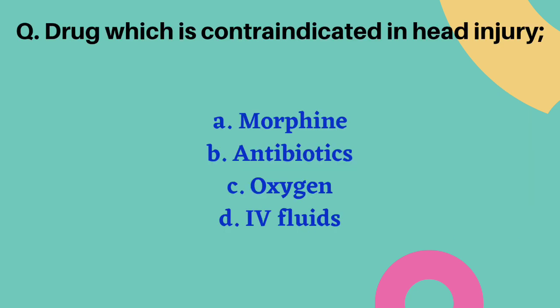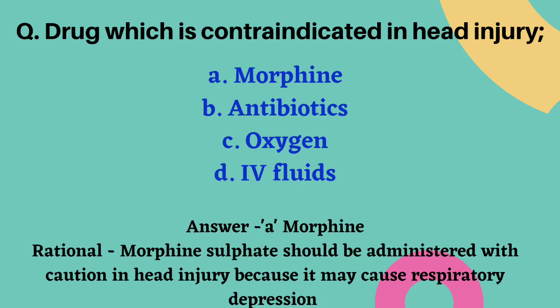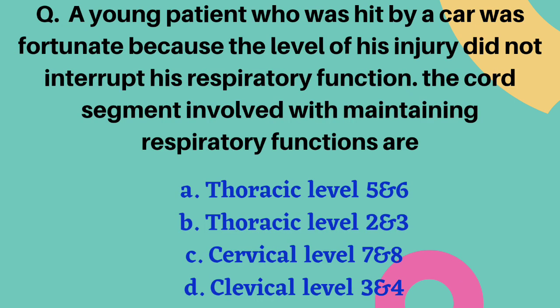Which drug is contraindicated in head injury? Options are morphine, antibiotics, oxygen, and IV fluids. The correct answer is option A — morphine. Morphine sulfate should be administered with caution in head injury patients because it may cause respiratory depression.